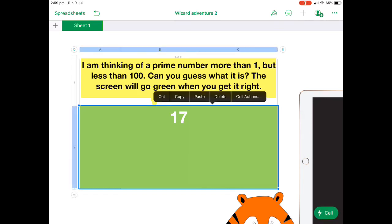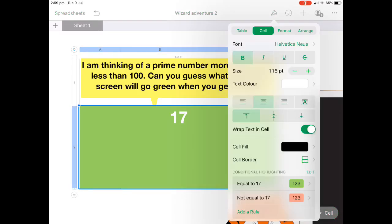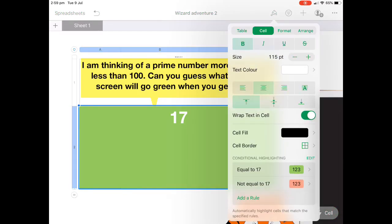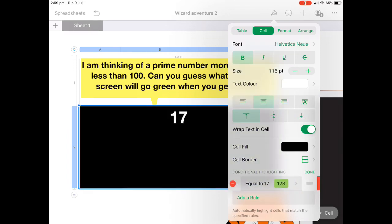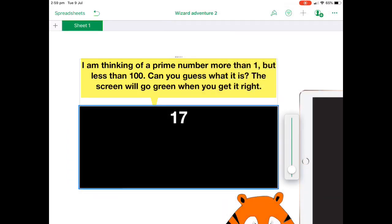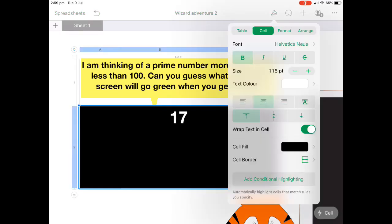If I press that cell and then press the paintbrush at the top, you'll see down the bottom I've got some conditional highlighting that I can actually create some rules. I've created two rules there. So I'm going to delete those and show you how I actually did it. So you just click on the cell itself, go up to the paintbrush and you say conditional highlighting.